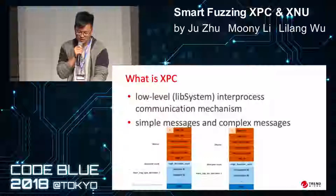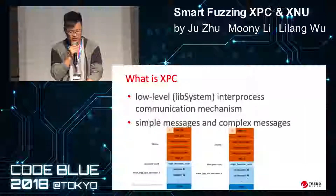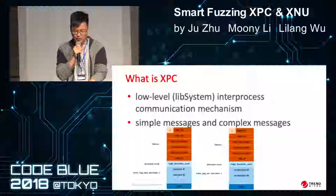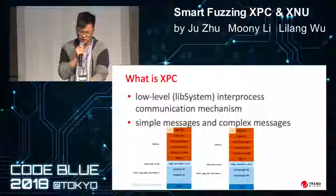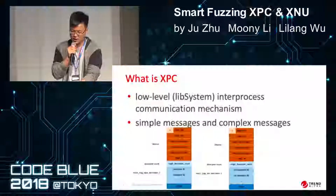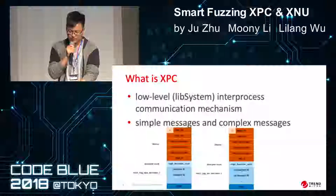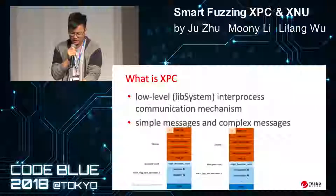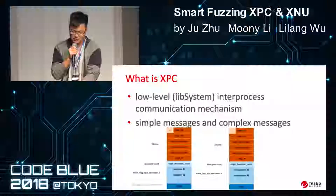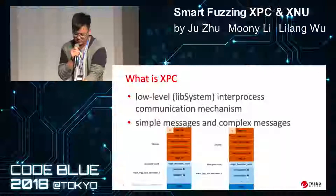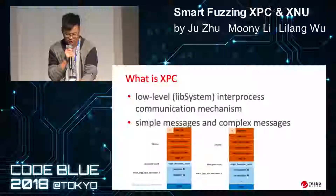XPC is one of the low-level inter-process communication mechanisms. The main security purpose is to separate privileges for different components. A common technique to break out of a sandbox is to obtain code execution at a higher privilege in an unsandboxed daemon. macOS and iOS provide many of these kinds of systems in order to implement different functions for applications. That is why we take XPC as our fuzzing target.